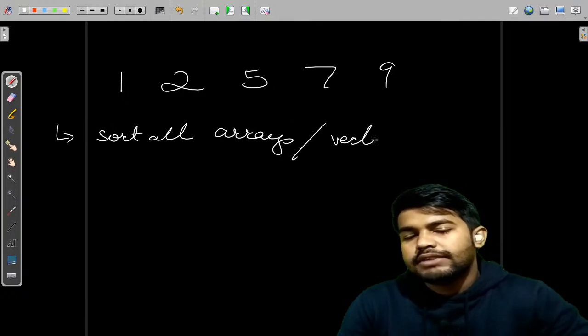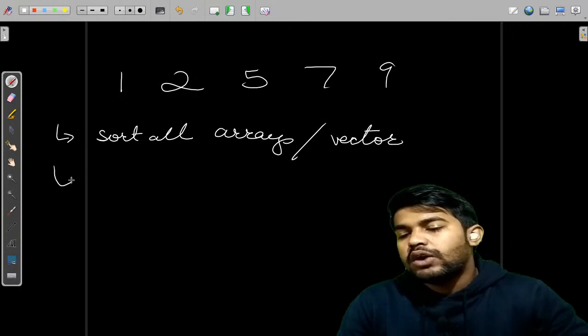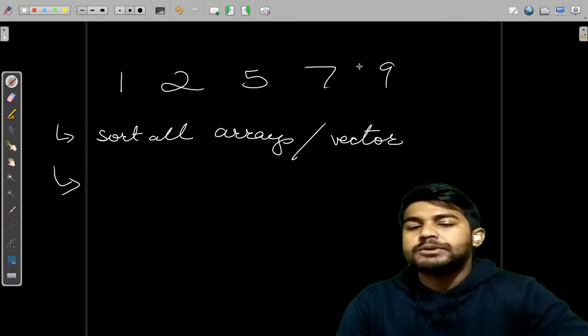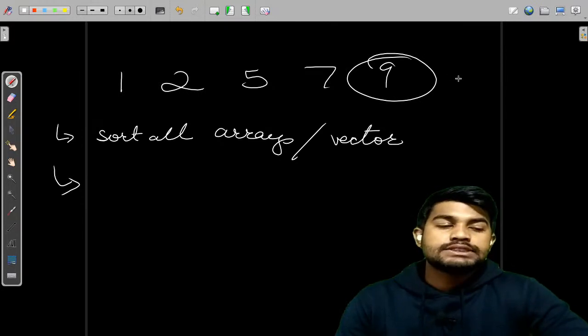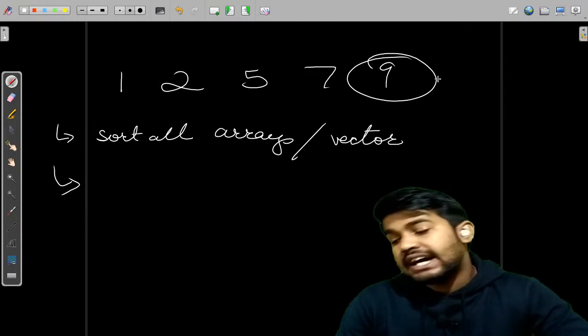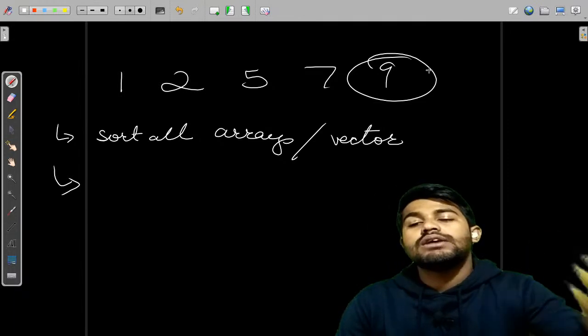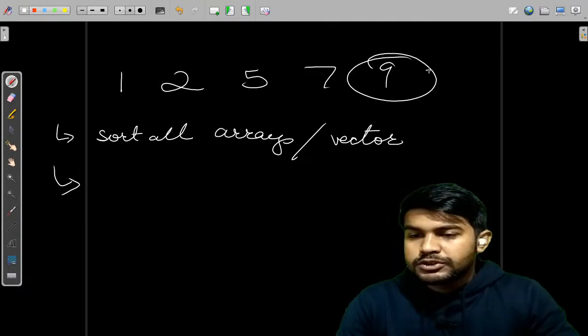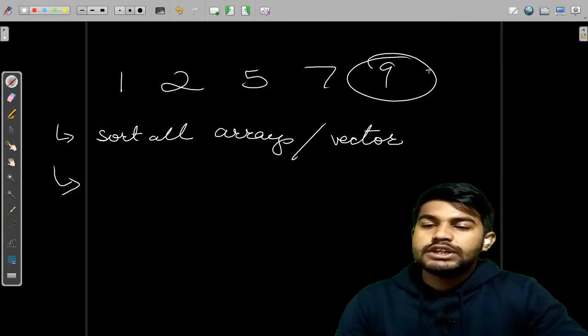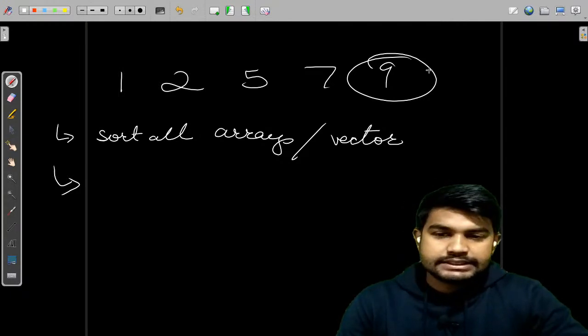After sorting, we would start from the back. Suppose we take the last element from the back, then we would take the element which is largest in the previous array but less than 9. This is what we would do.